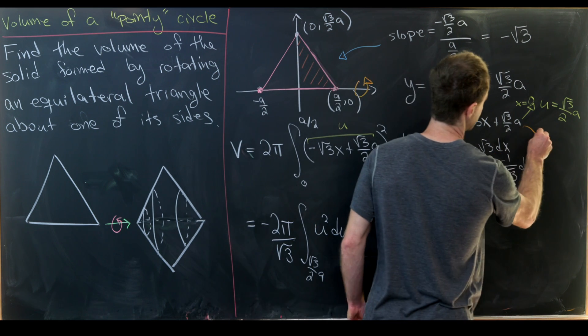And then for our upper bound of integration we need to plug in x equals a over two but notice that gives us u equals zero. So our new upper bound of integration is zero. But let's notice we can take this minus sign and change the order of the bounds of integration. So that'll give us root three over two a here and zero here if we just scrub this minus sign out.